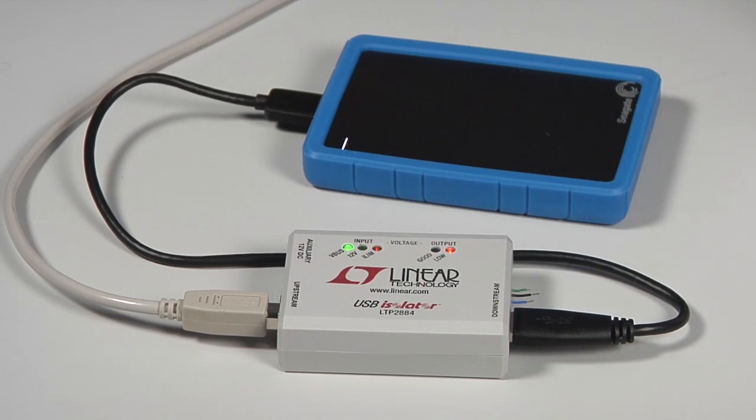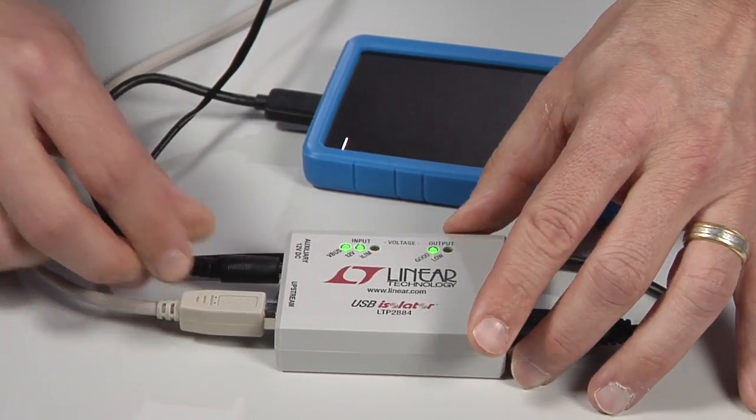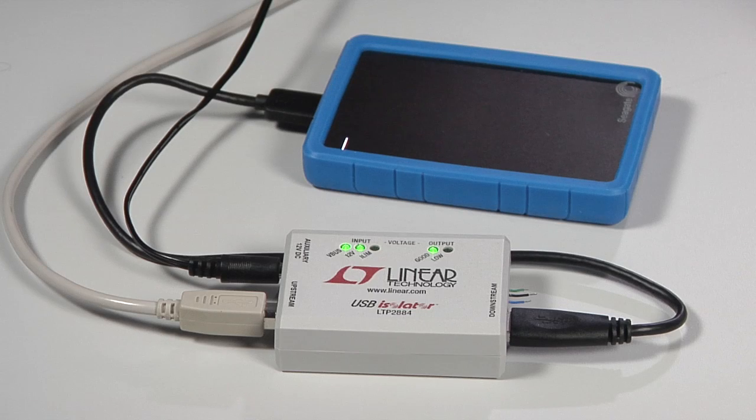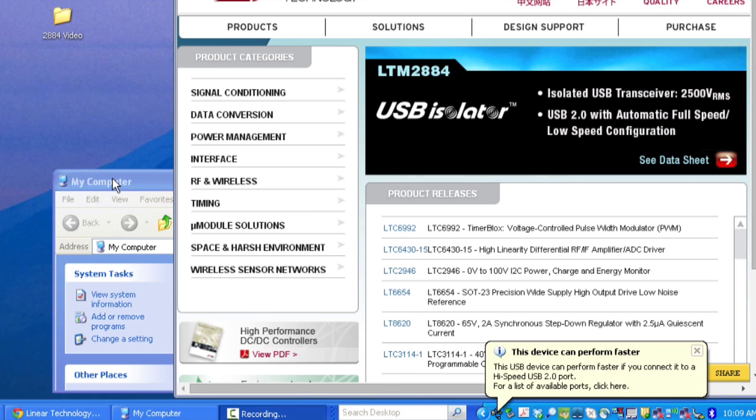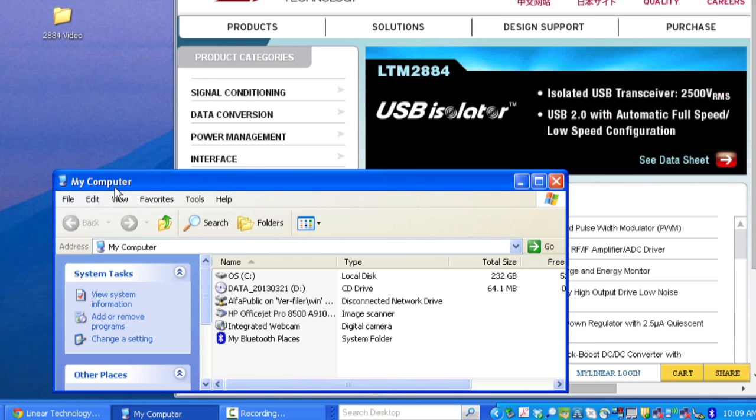However, the LTP2884 includes an input power path ideal diode. I can plug in a 12 volt wall adapter, which will feed the LTM2884's VCC, increasing available isolated output power to the full USB spec of 500 milliamps, and successfully powering up the hard drive. You can see the hard drive has connected and is displayed on the computer after enumeration, and I'm able to transfer files.